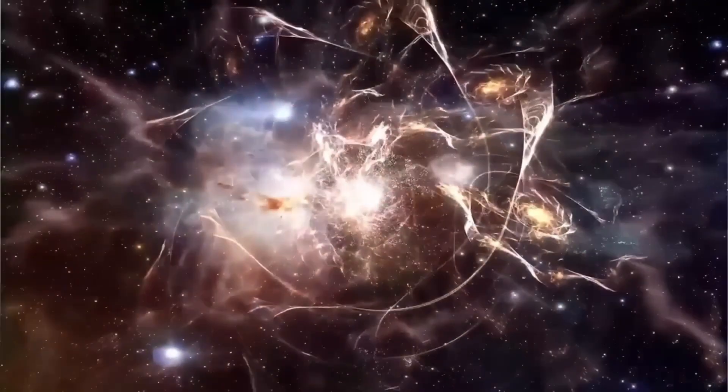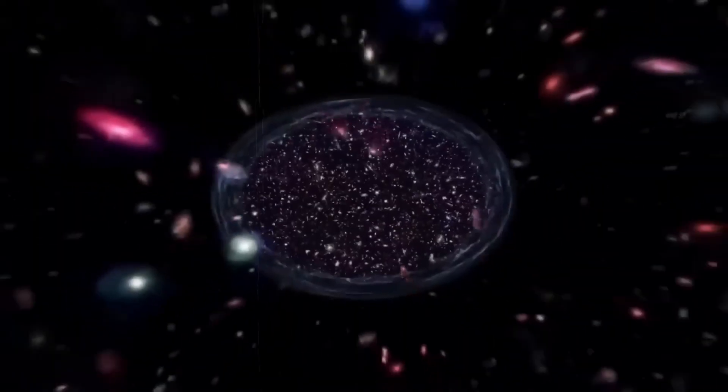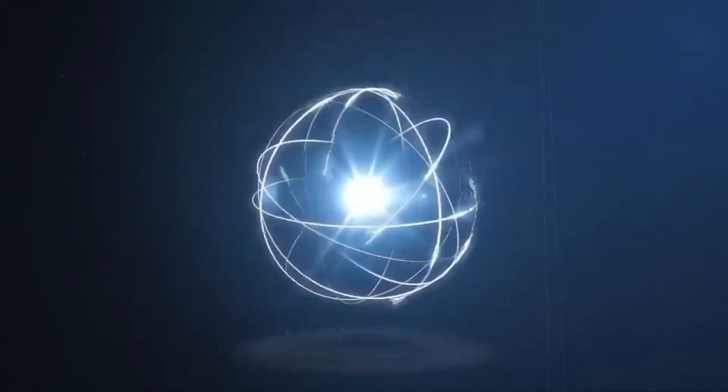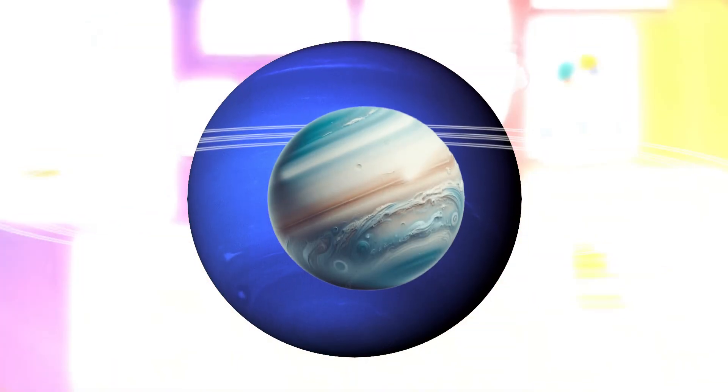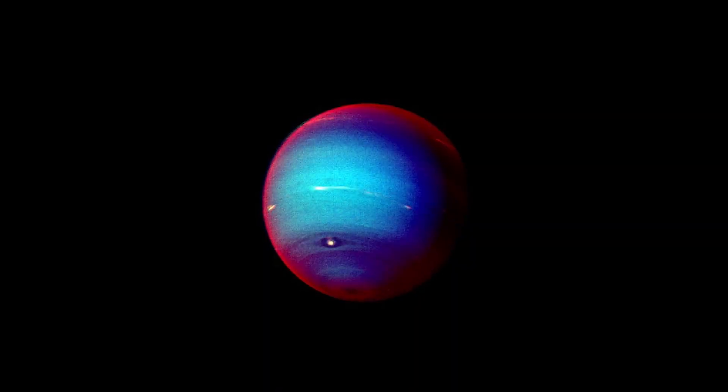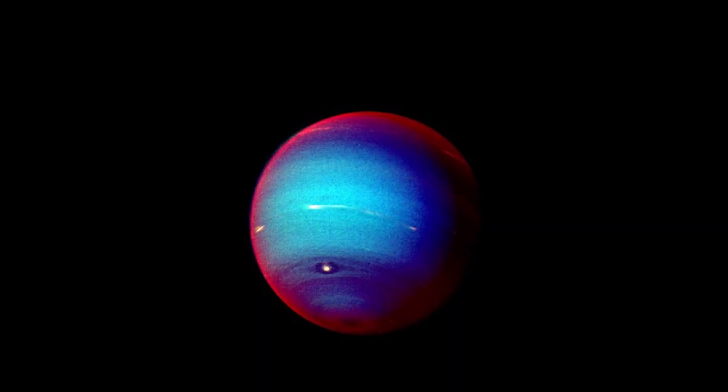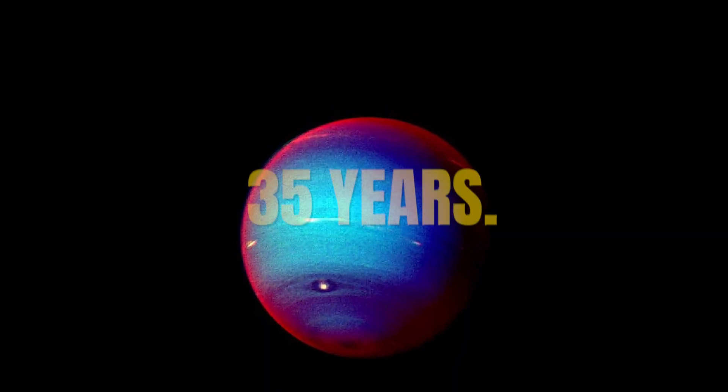The original images had been stretched to show clouds and storms, making Neptune appear artificially blue. The new processing revealed that Neptune and Uranus are actually remarkably similar shades of greenish-blue, not the deep azure we'd believed for 35 years.